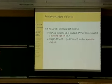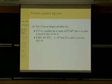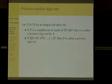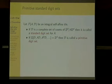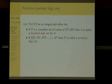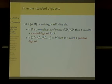There are two properties that are important in this context. Firstly, we want D to be a standard digit set, which means that D contains a complete set of cosets of set D modulo A times set D. And secondly, we want D to be a primitive digit set. This means that, loosely speaking, using D and A, we can go everywhere in the lattice.